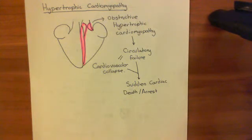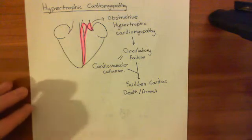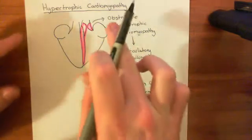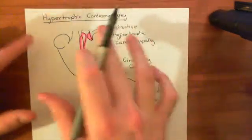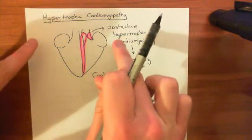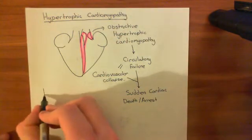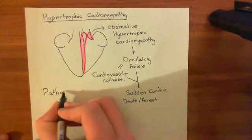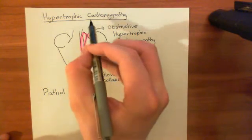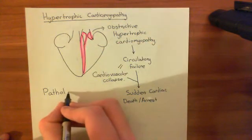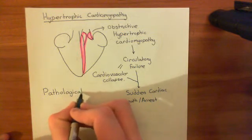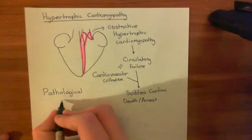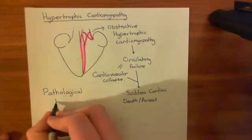Now let's talk about pathological hypertrophy. This is quite different from hypertrophic cardiomyopathy. Pathological hypertrophy is hypertrophy that occurs because of some other pathological reason — it is secondary to another pathology, such as a heart attack, which is a common example.